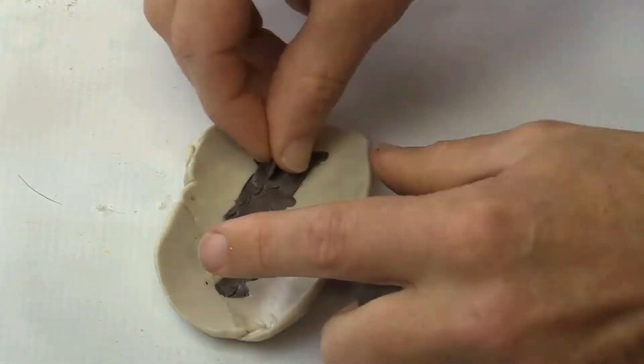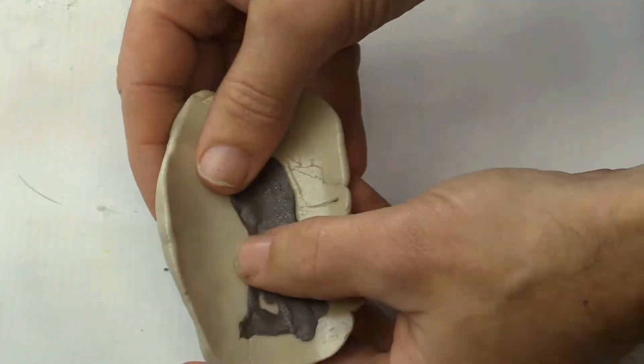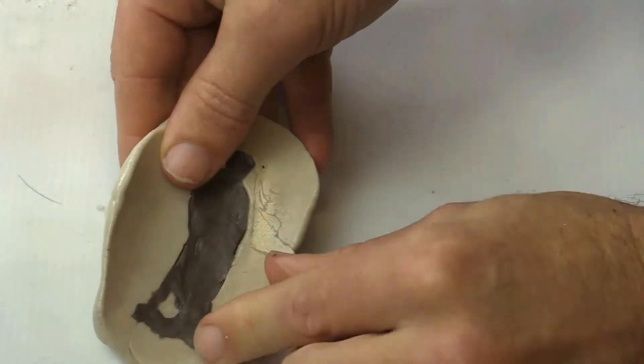A nice technique for polymer clay, epoxy putty, and fondant is to roll the casting clay back onto itself. It makes a smooth back edge that looks great.